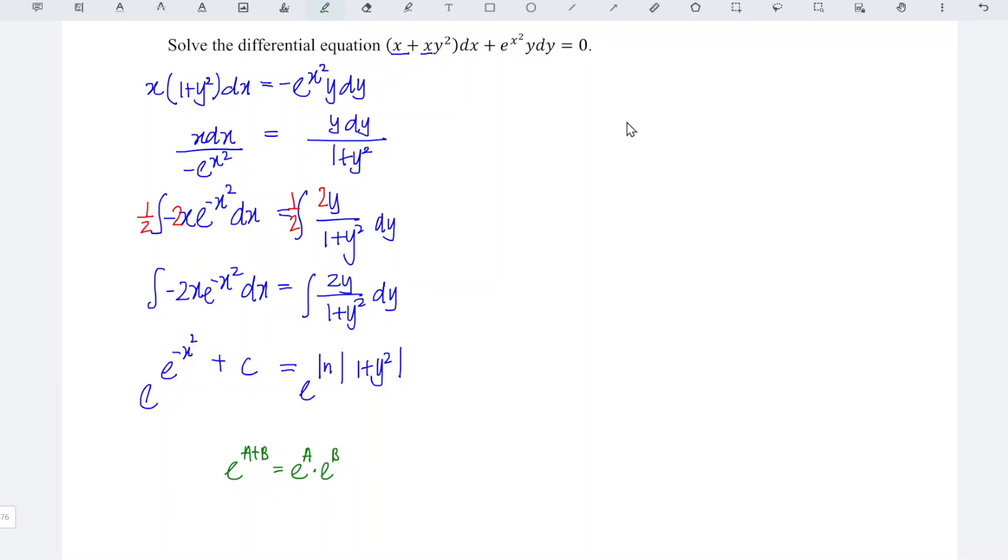So which means that for this part, we can rewrite as e to the power of negative x square times e to the power of c. And let's say we want to use back the constant c. We can introduce a subscript 1.